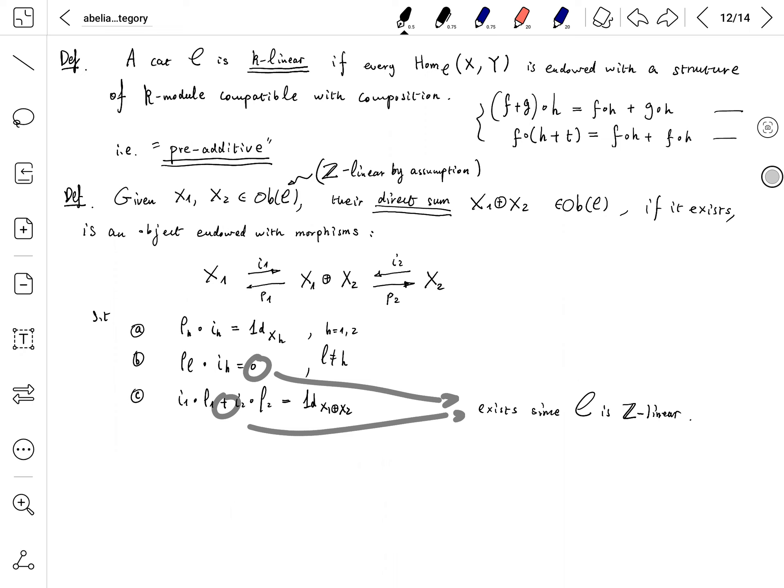The definition of direct sum for pre-additive category C: take any two objects X1, X2. We denote X1 direct sum X2, called the direct sum or biproduct. If it exists, it is an object which satisfies the following conditions.